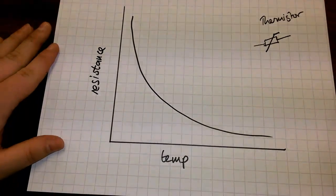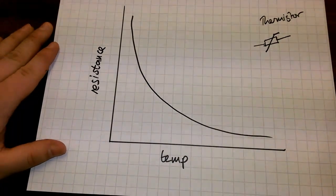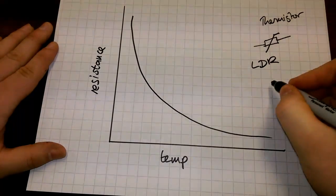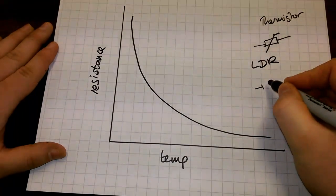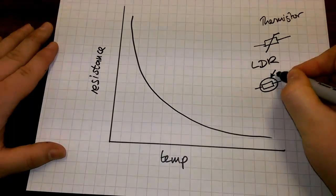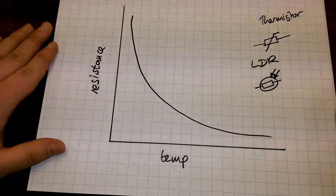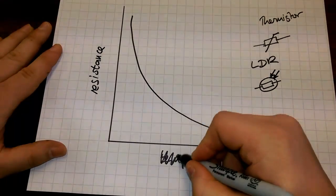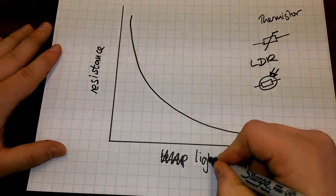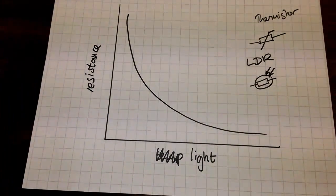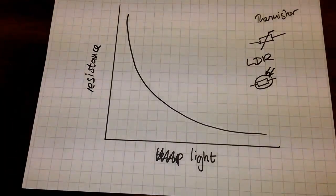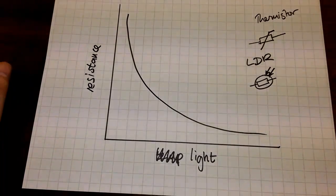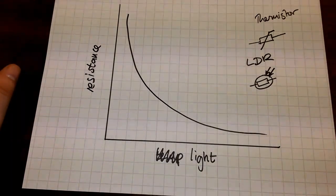Now, I could draw you a second graph for a light-dependent resistor, LDR. The symbol for that is a little resistor in a circle with some arrows coming in to represent the light. But, to be honest, it's much easier just to go... Because it's exactly the same shape graph, except you've got light on the bottom instead. As the light level increases, the resistance decreases. And that is all we need to know about LDRs and thermistors.